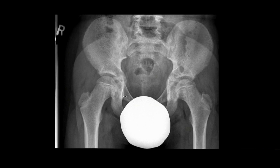Legg-Calvé-Perthes disease is osteonecrosis of the femoral head epiphysis in a child. Early radiographic findings include widening of the teardrop distance, which may be due to thickening of the cartilage, joint laxity, or presence of joint fluid; subchondral fracture, known as the crescent sign; and fragmentation, flattening, and increased mineralization of the femoral head epiphysis.